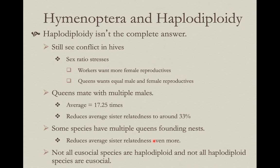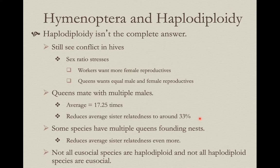Workers want far more queens produced. Additionally, the simplifying assumption that the queen mated only once doesn't always hold. In one study of honeybees, queens actually mated about 17 times, which reduces average sister relatedness to only about 33%. In some Hymenoptera species, multiple queens found nests, meaning some sisters don't share the same mother. These factors reduce the over-relatedness between sisters, so haplodiploidy may be part of the answer but not the entire answer.